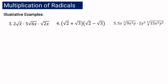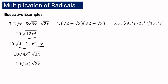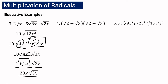Let us proceed with example number 3. We have 2 square root of x multiplied by 5 square root of 6x multiplied by square root of 2x. Multiply the coefficients: 2 times 5 times 1 equals 10. Multiply the radicands: x times 6x times 2x equals 12x cubed. So we get 10 square root of 12x cubed. To simplify 12x cubed, the correct factors are 4 times 3 for 12, and x squared times x for x cubed. The square root of 4x squared is 2x, and the remaining is square root of 3x. Multiplying 10 times 2x gives 20x square root of 3x as the final answer.